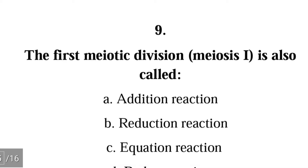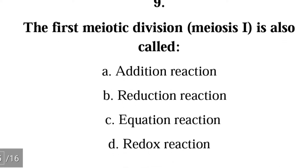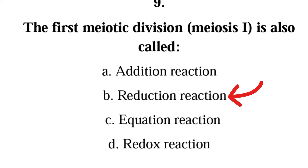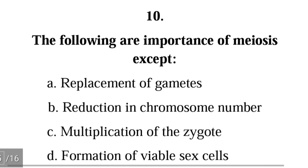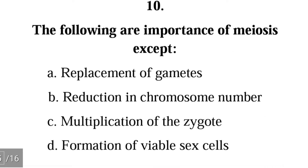Question 9: The first meiotic division, or meiosis 1, is also called — A. addition reaction, B. reduction reaction, C. equation reaction, D. redox reaction. The correct answer is B, reduction reaction. After meiosis 1, the chromosome number reduces from 46 to 23, making it a reduction reaction.